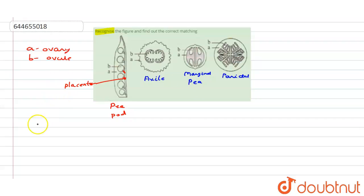So see what is the axile placentation. What happens in this? Here the ovules are attached to a central axis inside a multilocular ovary having many locules. And it is mostly seen in lemon as well as tomato.